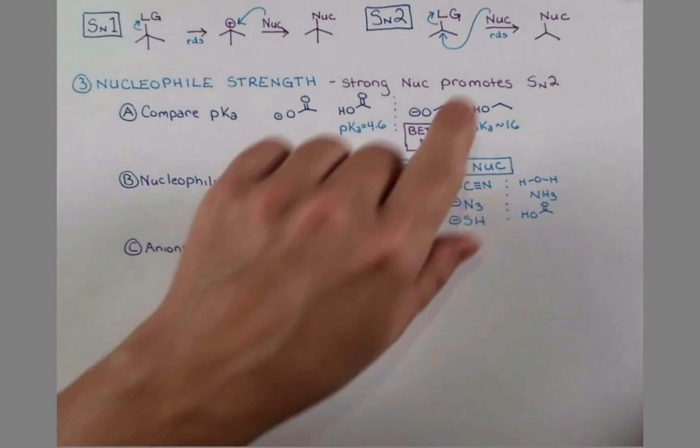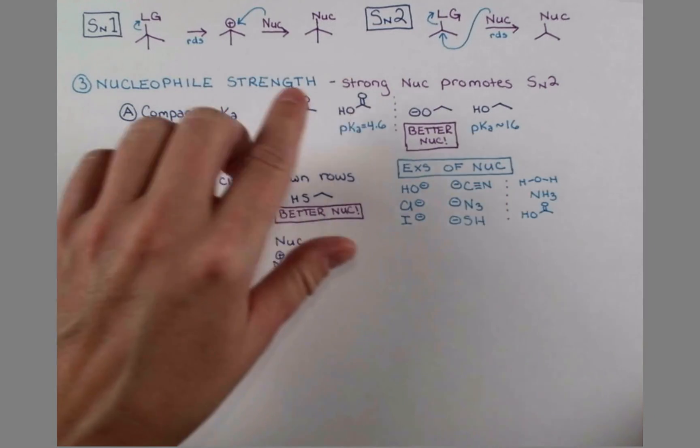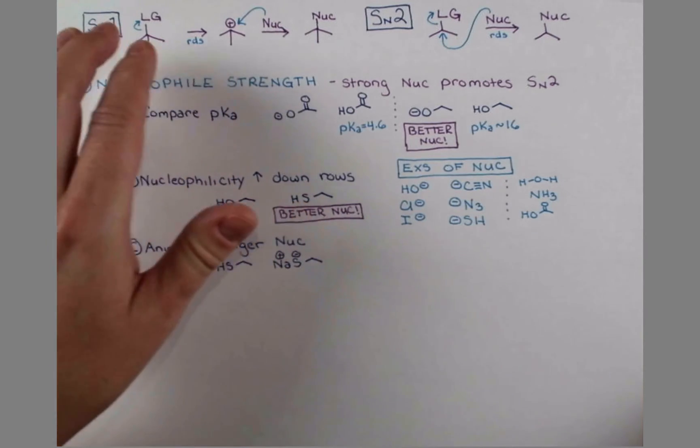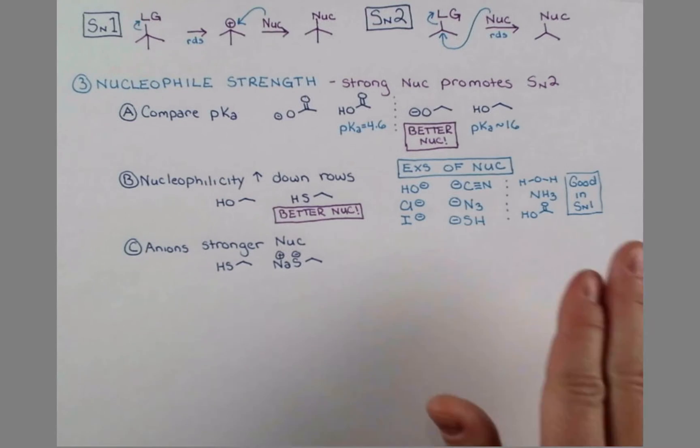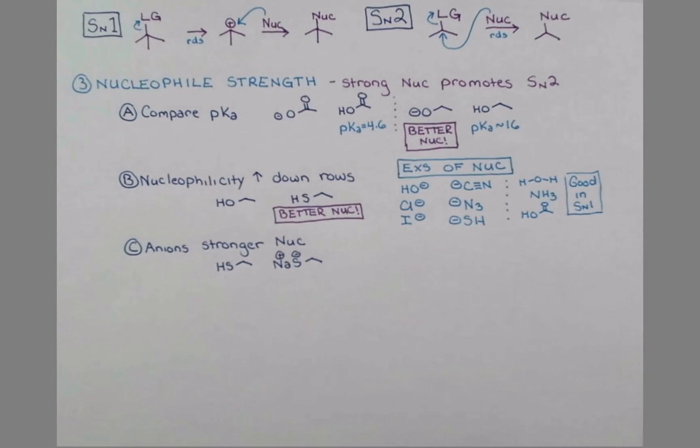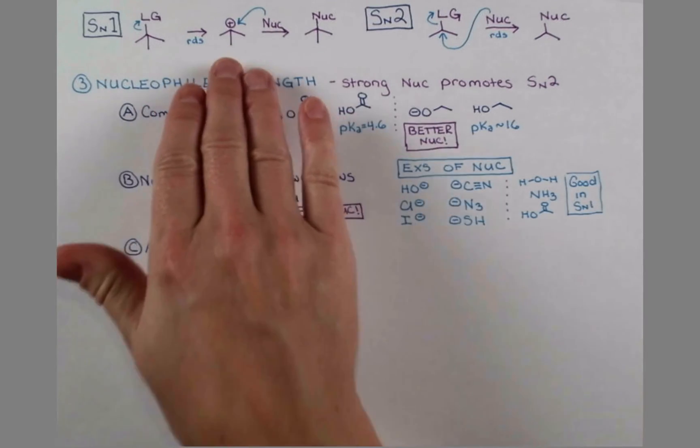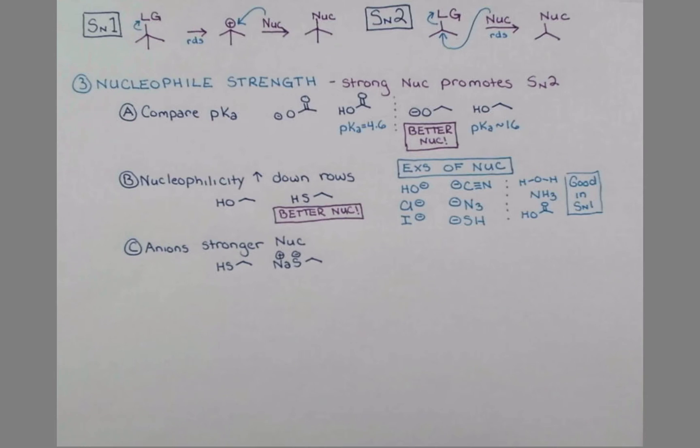So again, since we don't need the nucleophile to push out this leaving group in the SN1 reaction, neutral nucleophiles are perfectly fine. In fact, in SN1 reactions, it's common to run the reaction with the nucleophile as the solvent. It gives us lots of molecules ready to attack that carbocation once it forms. And these are all polar protic.